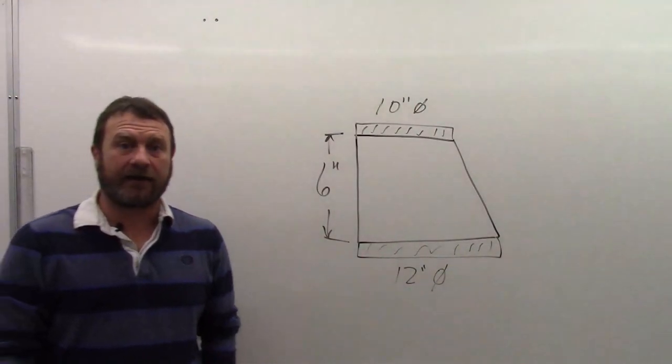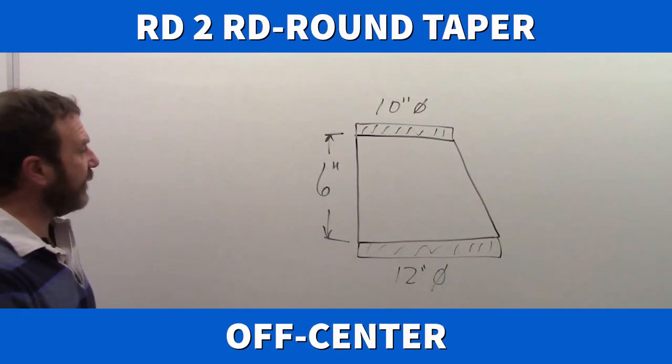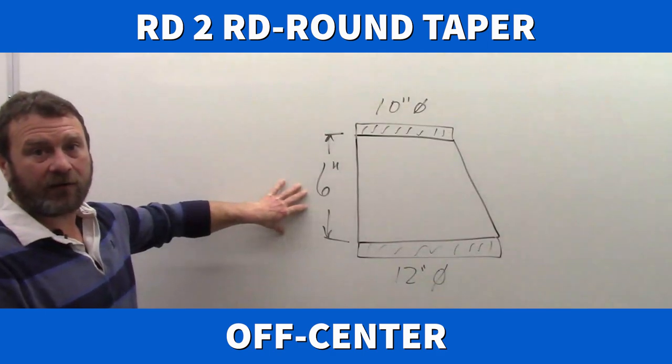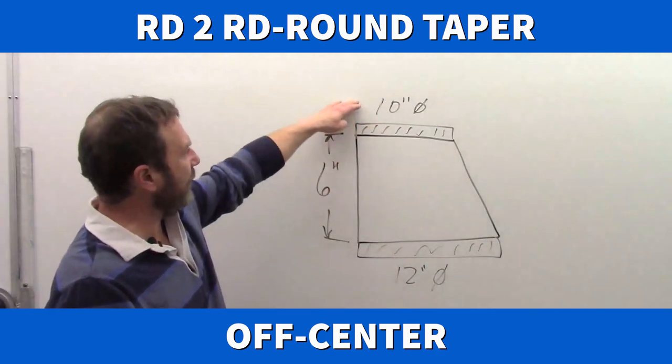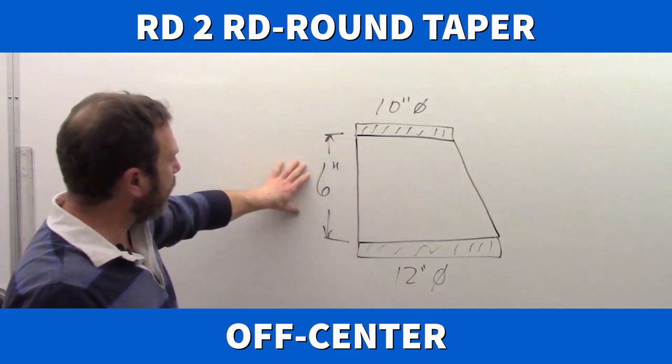Okay, we're back again to look at another triangulated fitting, and this one is an off-center round-to-round, or round taper. 12-inch diameter to 10-inch diameter, over a height of 6 inches.